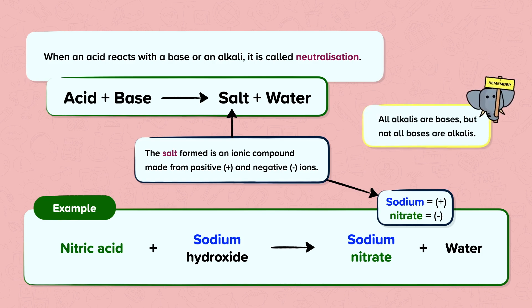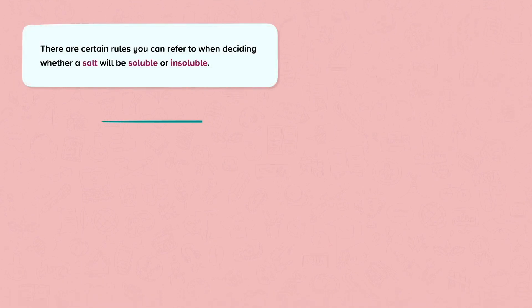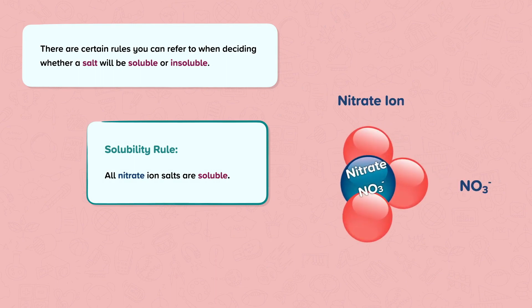Remember, all alkalis are bases but not all bases are alkalis. There are certain rules you can refer to when deciding whether a salt will be soluble or insoluble. Here we can see a solubility rule: all nitrate ion salts are soluble. If the negative part of the salt is a nitrate ion, then the solubility rule states that the salt will be soluble.